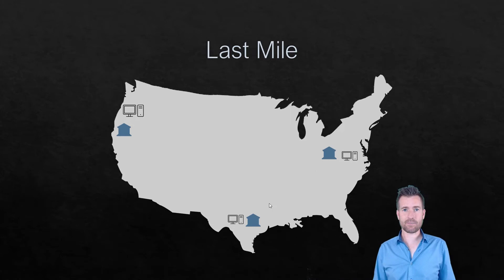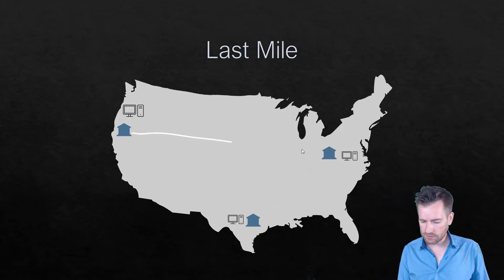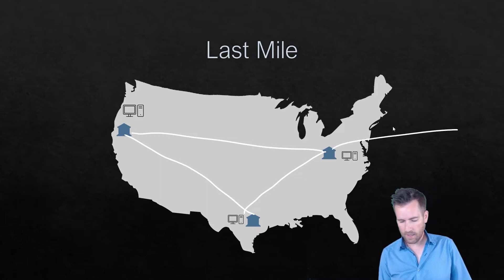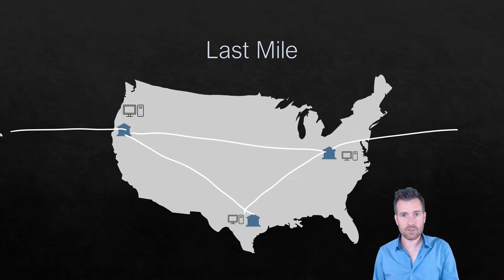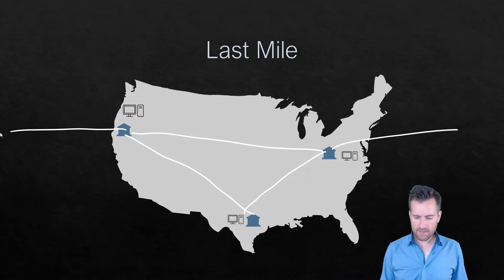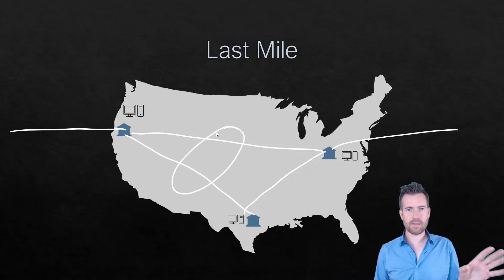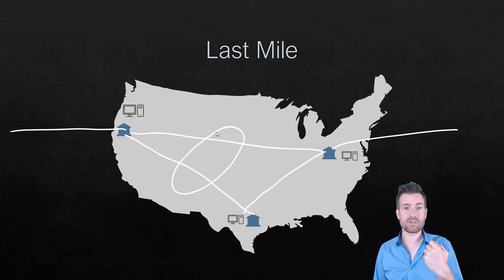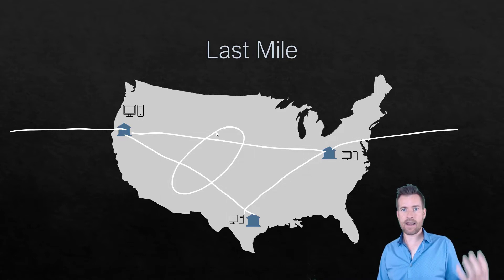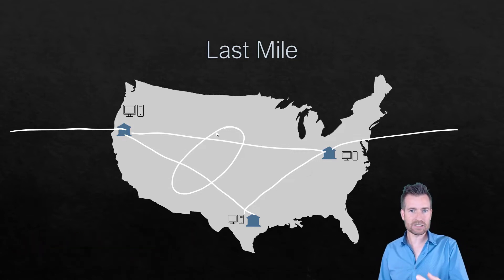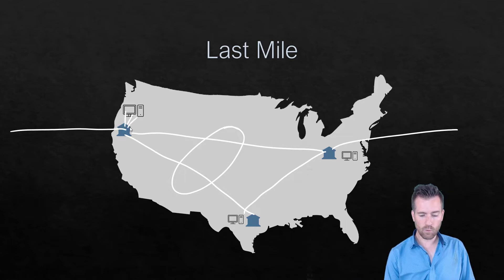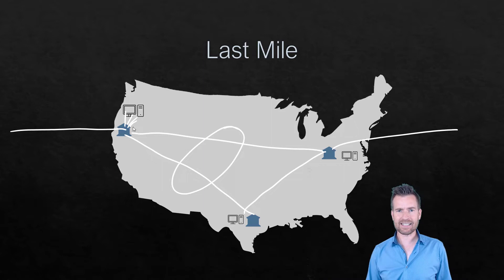Let's first talk about this concept of the last mile. The internet consists of cables that run all across the world, from country to country and within countries. We need access to the internet, and while millions of people paying for it funds the large backbone infrastructure, digging trenches to get strong connections to each individual house gets really expensive. We call this the last mile.